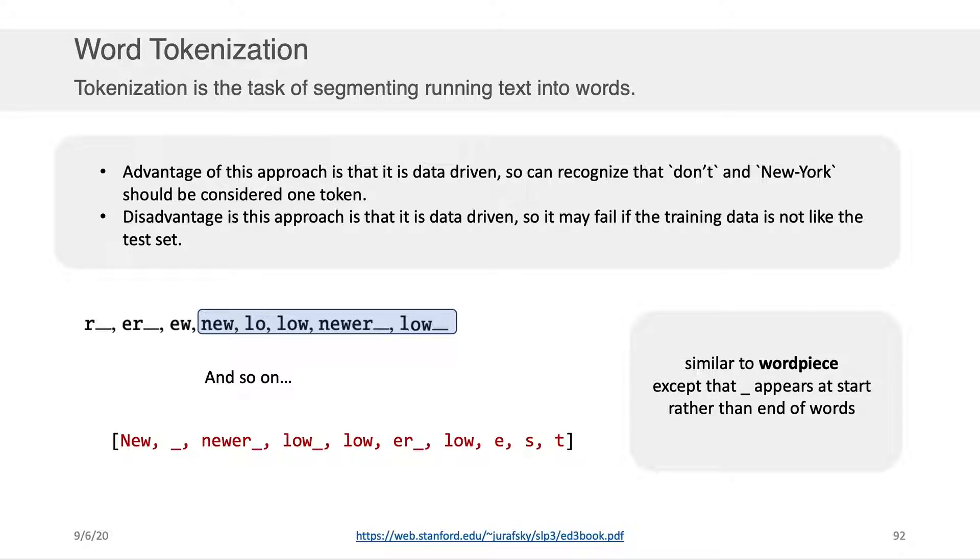The advantage of approaches like byte-pair encoding is that ostensibly, they could learn things like the fact that New York, for example, is a single word, or that don't should be considered one word and shouldn't be broken. The disadvantage, of course, is that this approach is data-driven, so it could fail if your training data is not sufficiently like your test set.